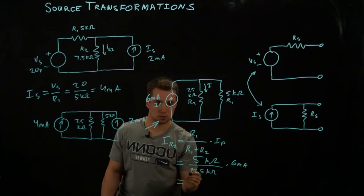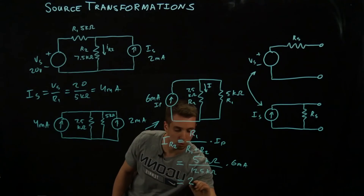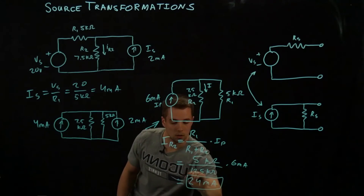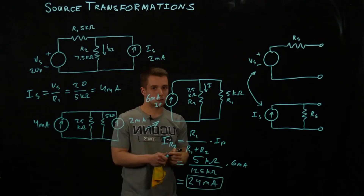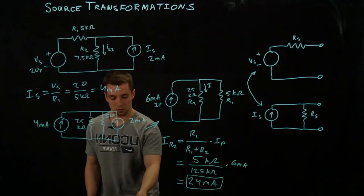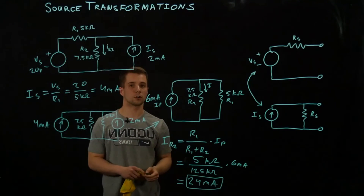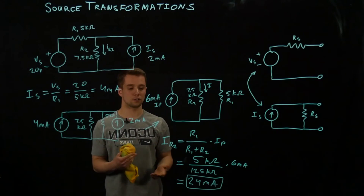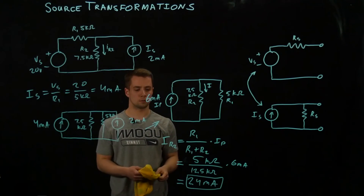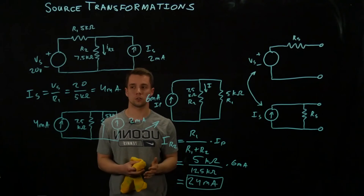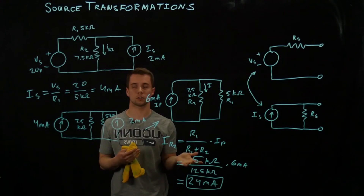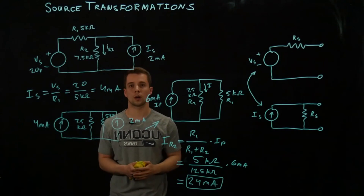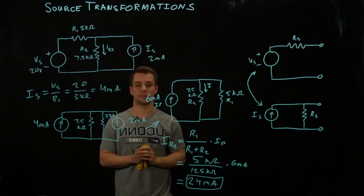And that gives us 2.4 milliamps. As you can see, solving the circuit by converting to one current source made it a lot easier to find the answer. Depending on the circumstances, you might want to go from current sources to voltage sources — it really depends on the problem. That's all for now, thanks for watching.